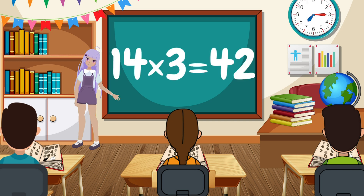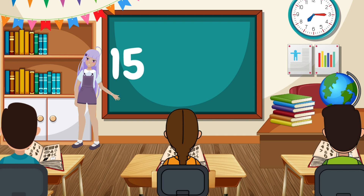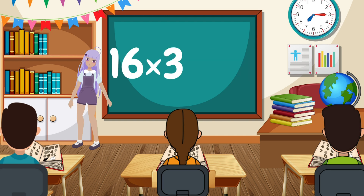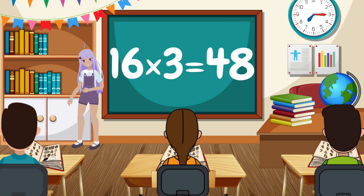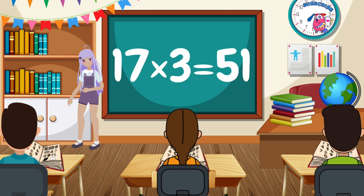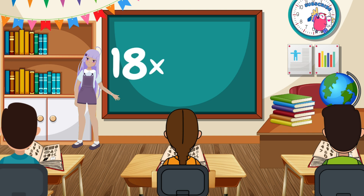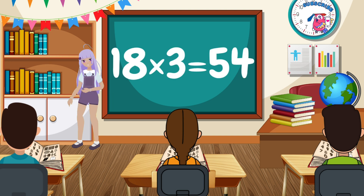15 x 3 equals 45. 16 x 3 equals 48. 17 x 3 equals 51. 18 x 3 equals 54.